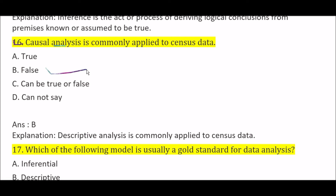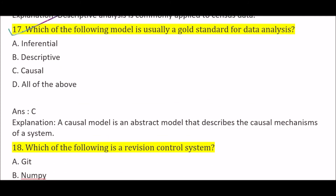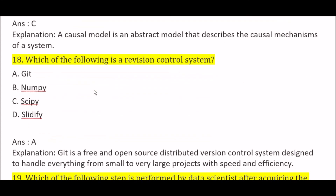Which of the following models is usually a gold standard for data analysis? Option A: inferential, Option B: descriptive, Option C: causal, Option D: all of the above. The right answer is Option C, causal, because a causal model is an abstract model that describes the causal mechanism of a system.